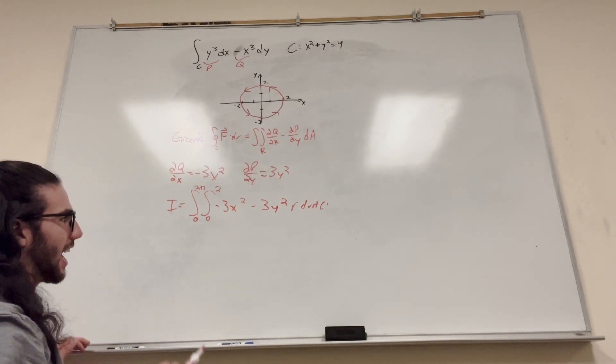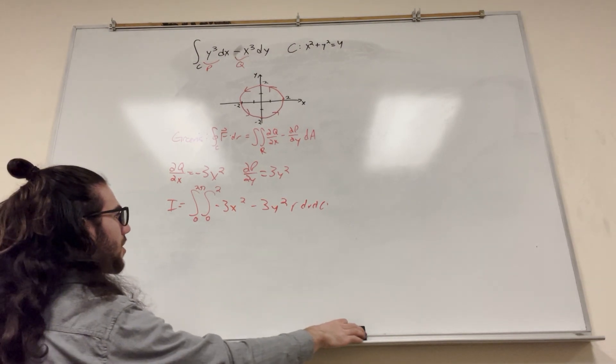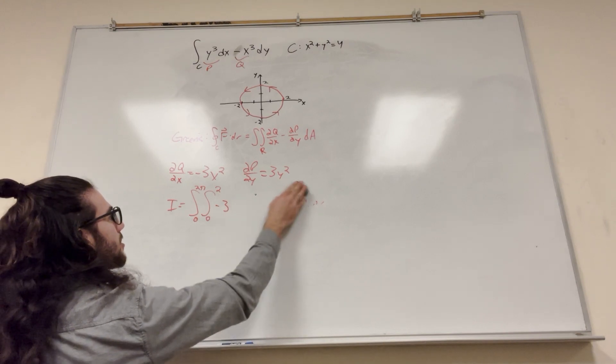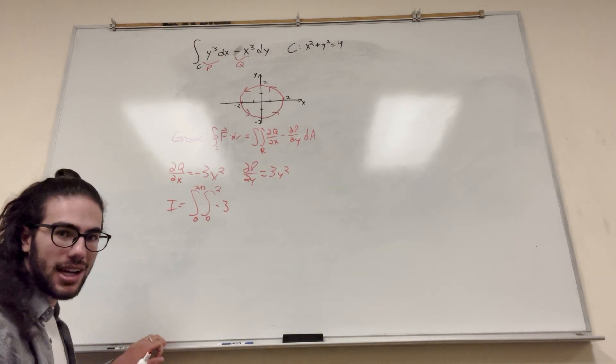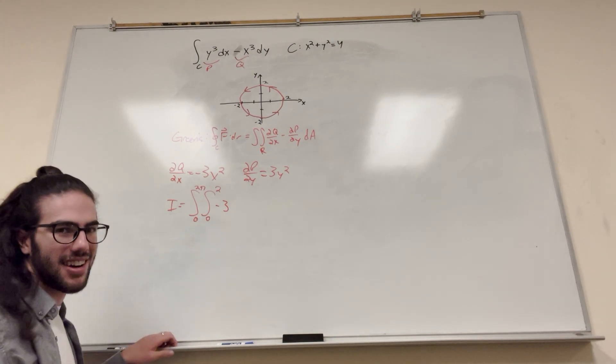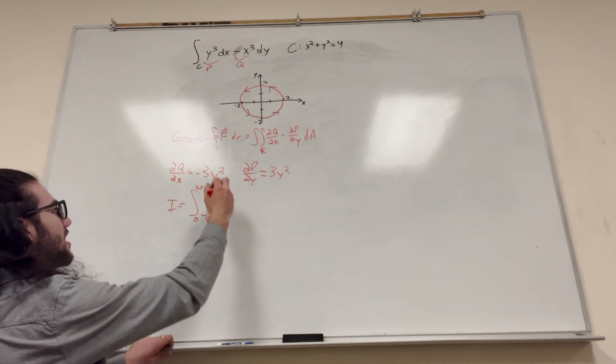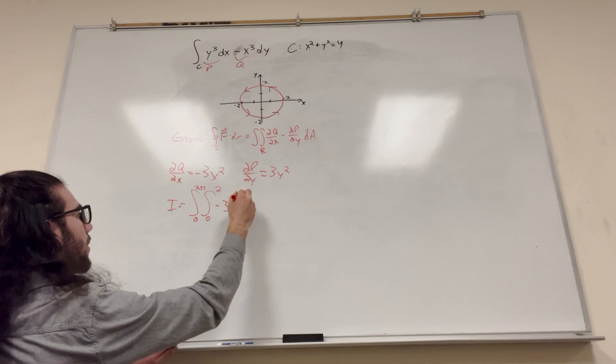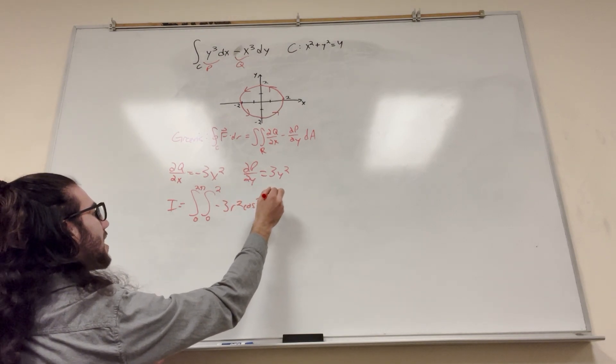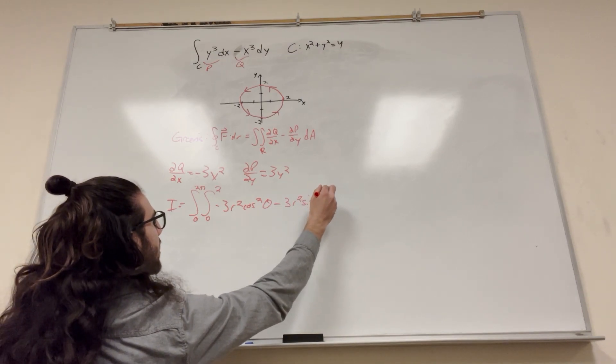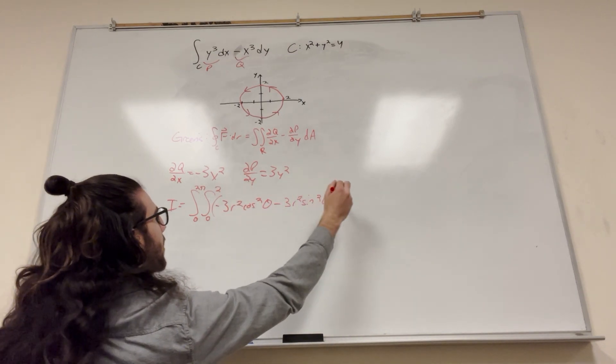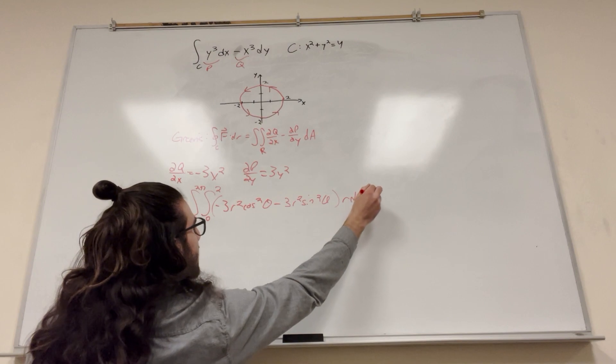But you'll notice my error here is that I have x's and y's with my r, so of course I need to replace the x's and y's with r's. So we know that when we use polar, x turns into r cosine θ, so negative 3r squared cosine squared θ minus 3r squared sine squared θ, all of this multiplied by r dr dθ.